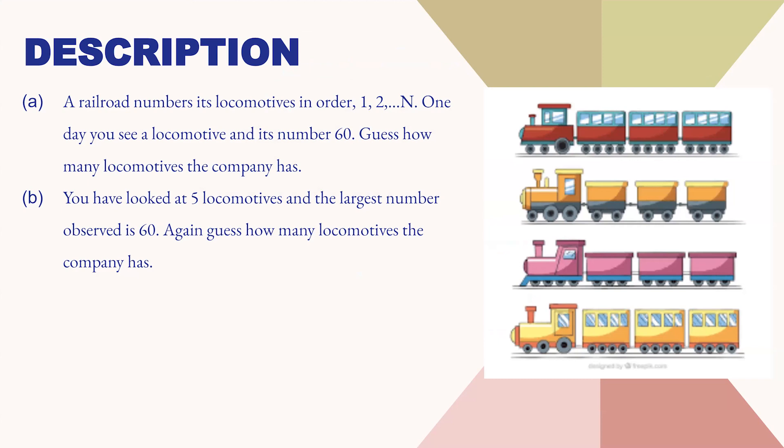And in the second part, you have seen 5 locomotives and the maximum number that you have seen is again 60. So now you again need to make a guess at how many locomotives the company has.